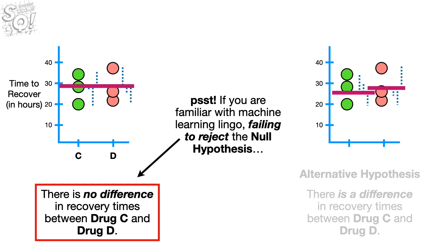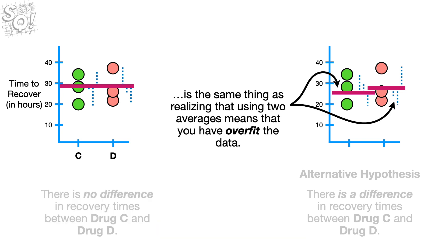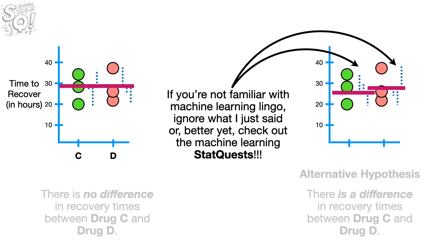Psst! If you're familiar with machine learning lingo, failing to reject the Null Hypothesis is the same thing as realizing that using two averages means that you have overfit the data. If you're not familiar with machine learning lingo, ignore what I just said. Or, better yet, check out the machine learning StatQuests.